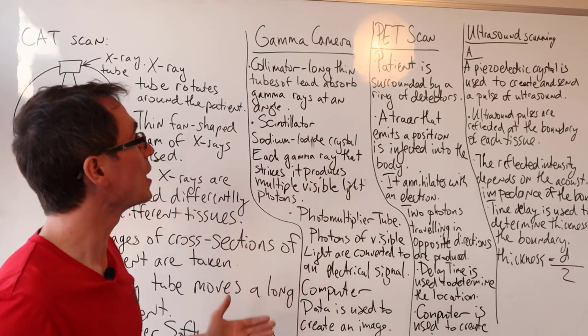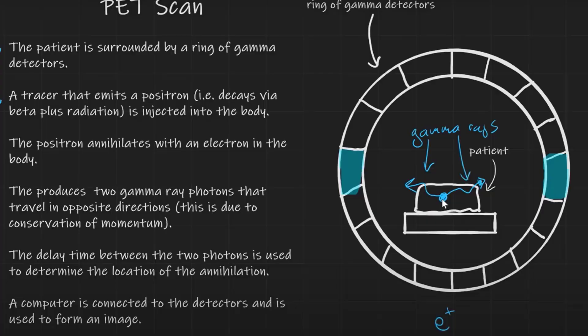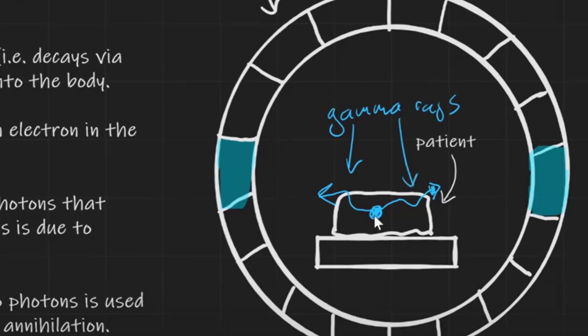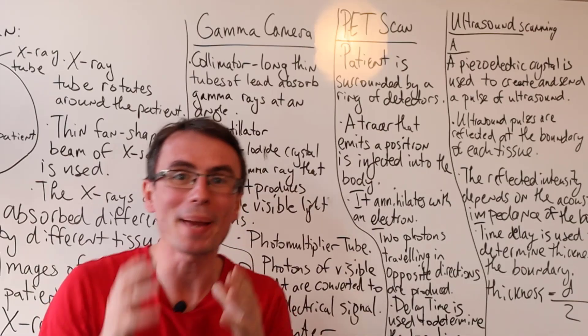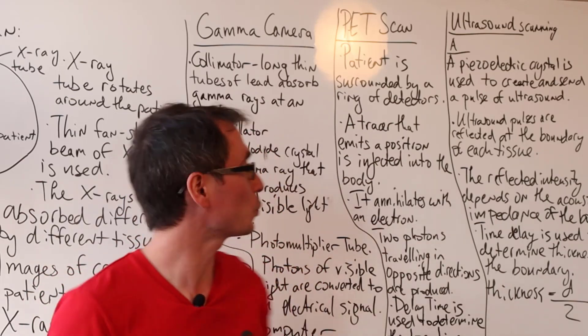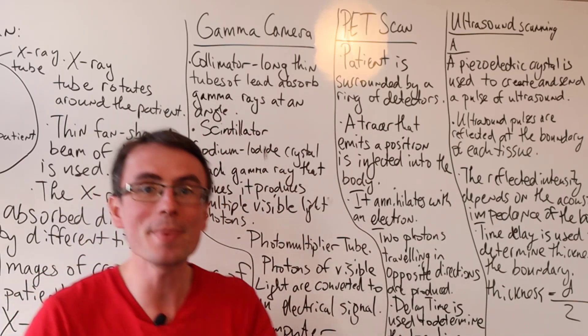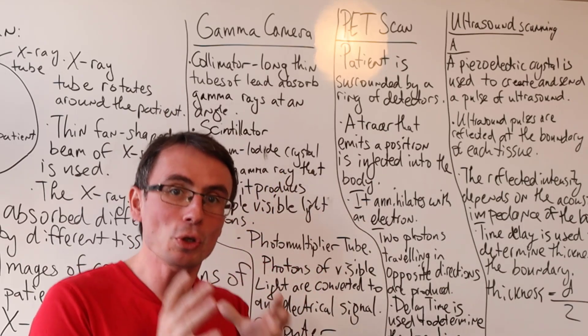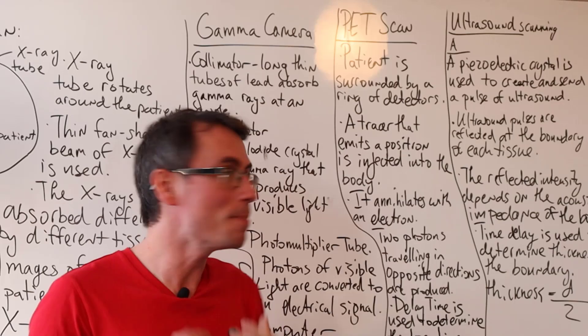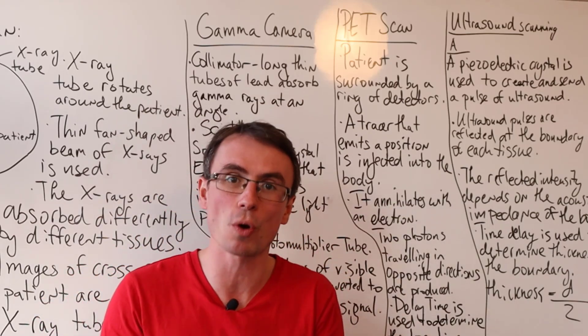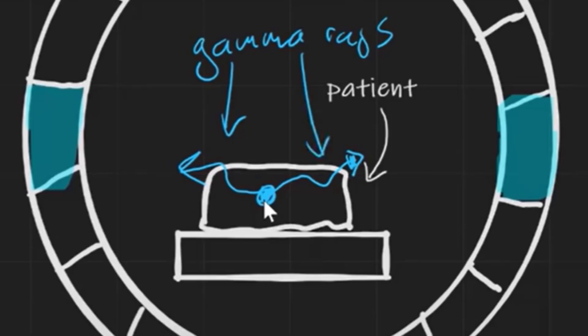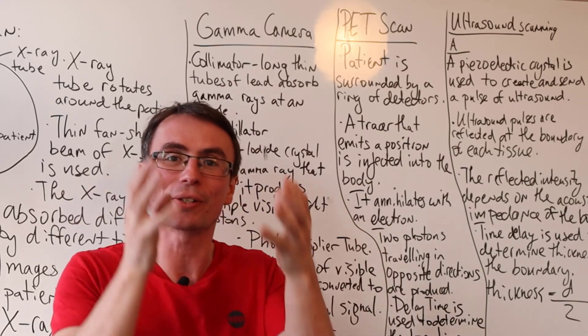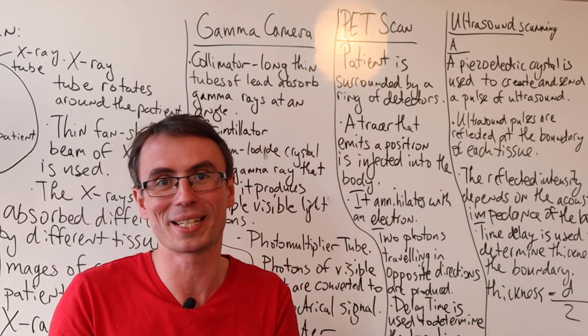What is a PET scan? In a PET scan, the patient is actually surrounded by an entire ring of gamma detectors. The patient would have consumed a medical tracer that emits a positron via beta plus decay. Now, as soon as the positron is emitted, it will annihilate with an electron within the body. This will produce two photons traveling in opposite directions. It has to produce two photons because only then will momentum be conserved.